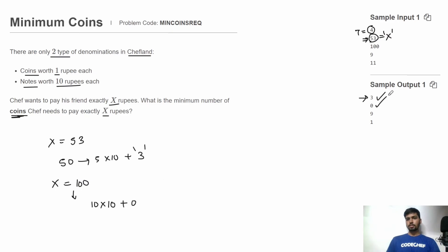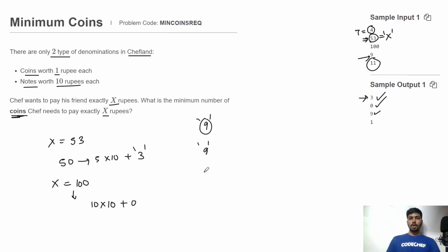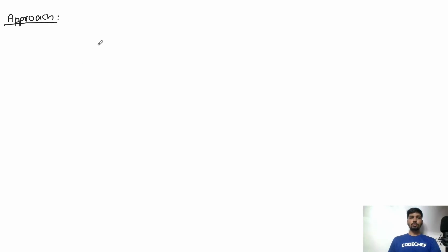In the third test case, X is 9. Chef cannot pay in notes, so all 9 rupees must be paid in coins and the output is 9. In the fourth test case, X is 11, so chef can pay 1 note of 10 rupees and 1 coin of 1 rupee, so the minimum number of coins is 1 and the output is 1.